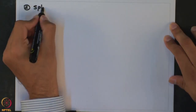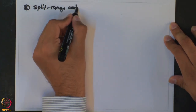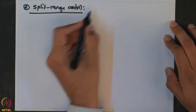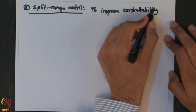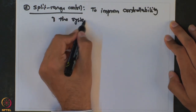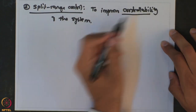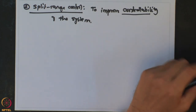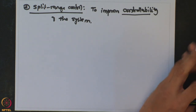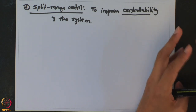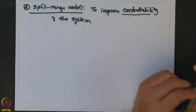Welcome back. Let us now look at the second traditional advanced control strategy: split range control. Split range control strategy is implemented to improve controllability of the system. I am using a very crude notion of controllability here — it has a deeper meaning in process controls literature. What I want to represent is that you want to improve the range of disturbance across which the process remains controllable.